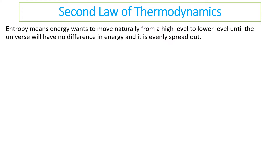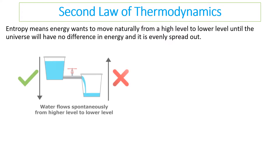Entropy means energy naturally moves from a high level to a low level until there is no difference — the universe itself is spreading out and energy is dispersing. Like water automatically flowing from a higher level to a lower level until equalized, it won't ever flow back upward to the cup at the top.